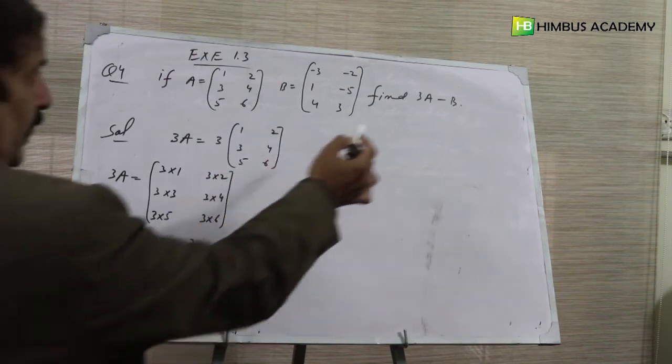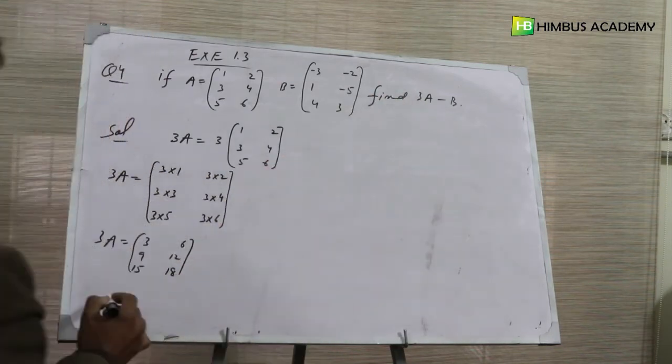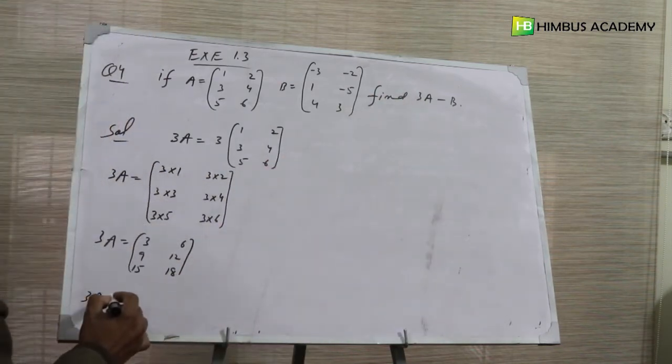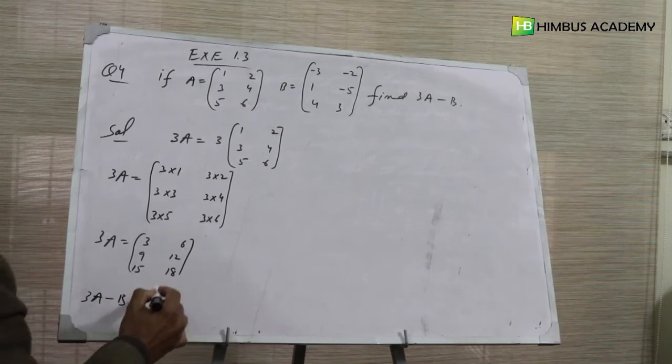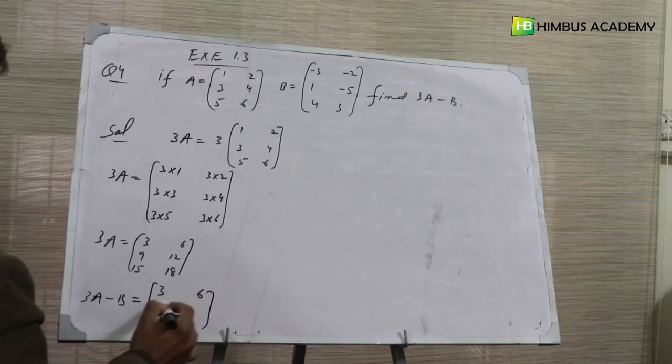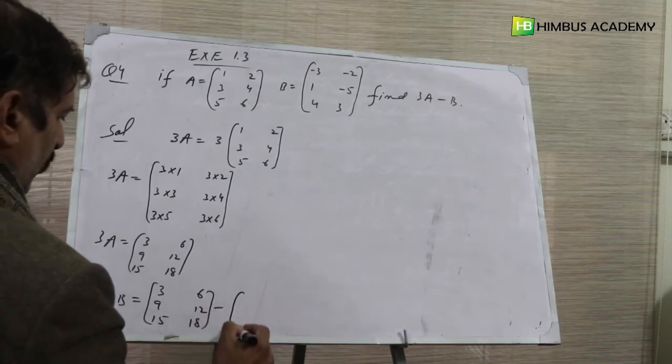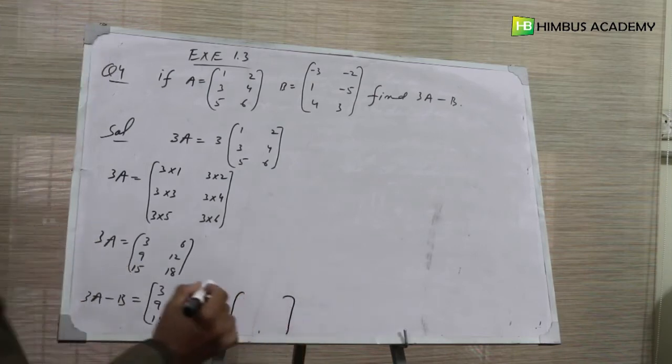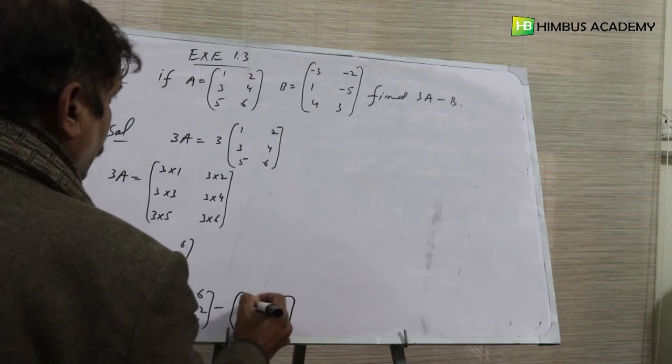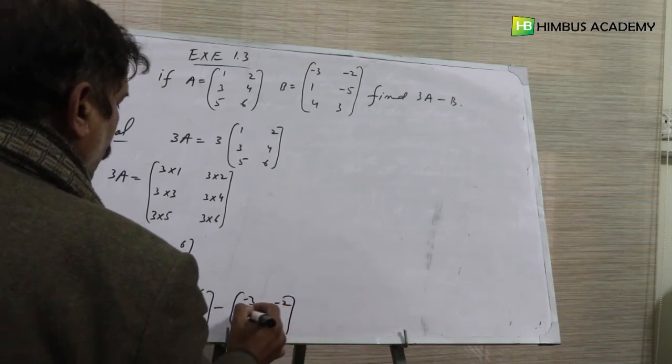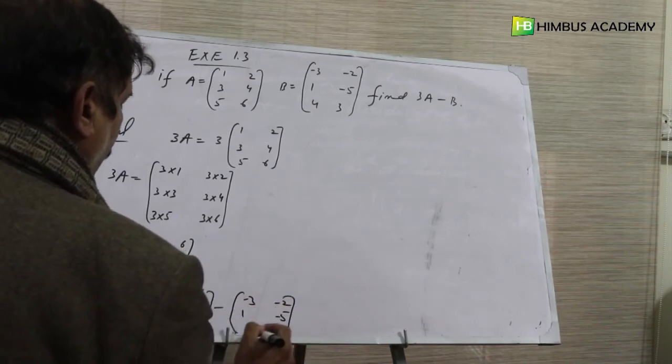Now we need to find 3A minus B. So 3A minus B means we write the 3A matrix: 3, 6, 9, 12, 15, 18, and minus B, which means minus matrix B: minus 3, minus 2, 1, minus 5, 4, 3.